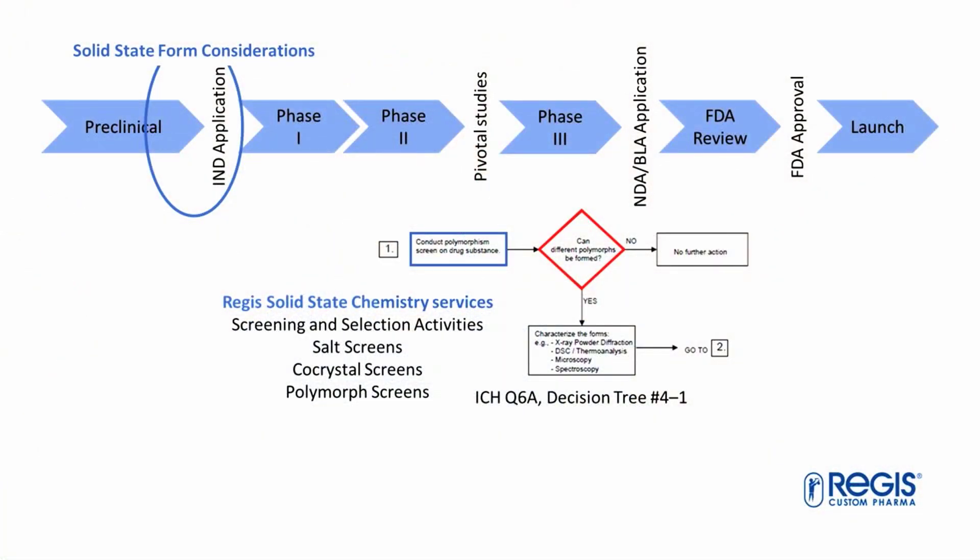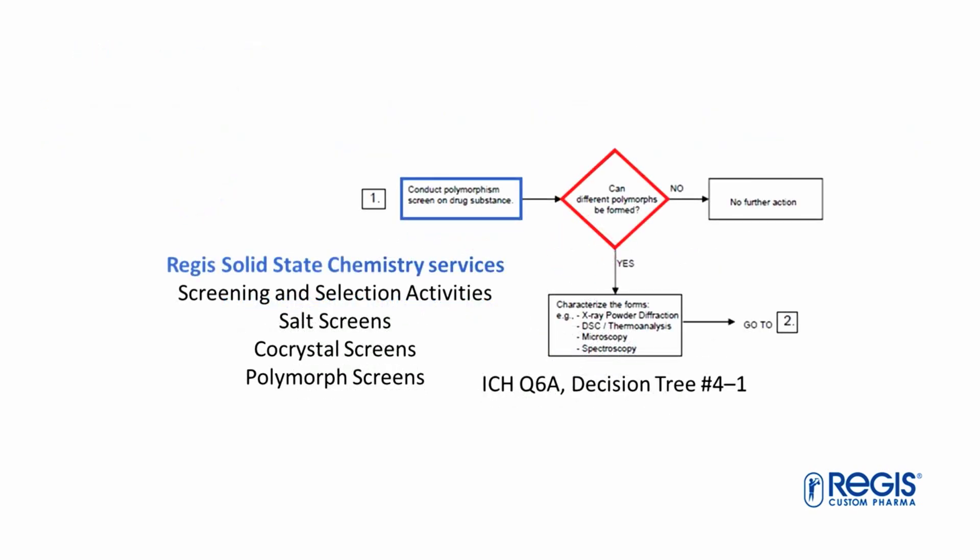There are guidelines for the industry. Let's look at some of those now. The FDA has a guideline for content and format for IND applications of phase 1 studies for drugs. It clearly states a brief description of the drug substance, including the physical, chemical, or biological characteristics, and some evidence to support its chemical structure should be submitted, along with a brief description of the methods used and the proposed acceptable limits. If we also look at the ICH Q6A specifications — test procedures and acceptance criteria for new drug substances and new drug products — there are several decision trees. Decision Tree 4.1 instructs us to conduct a polymorph screen to answer: can different polymorphs be formed? And if so, you need to characterize those by the appropriate techniques. We'll come back to Q6A later.